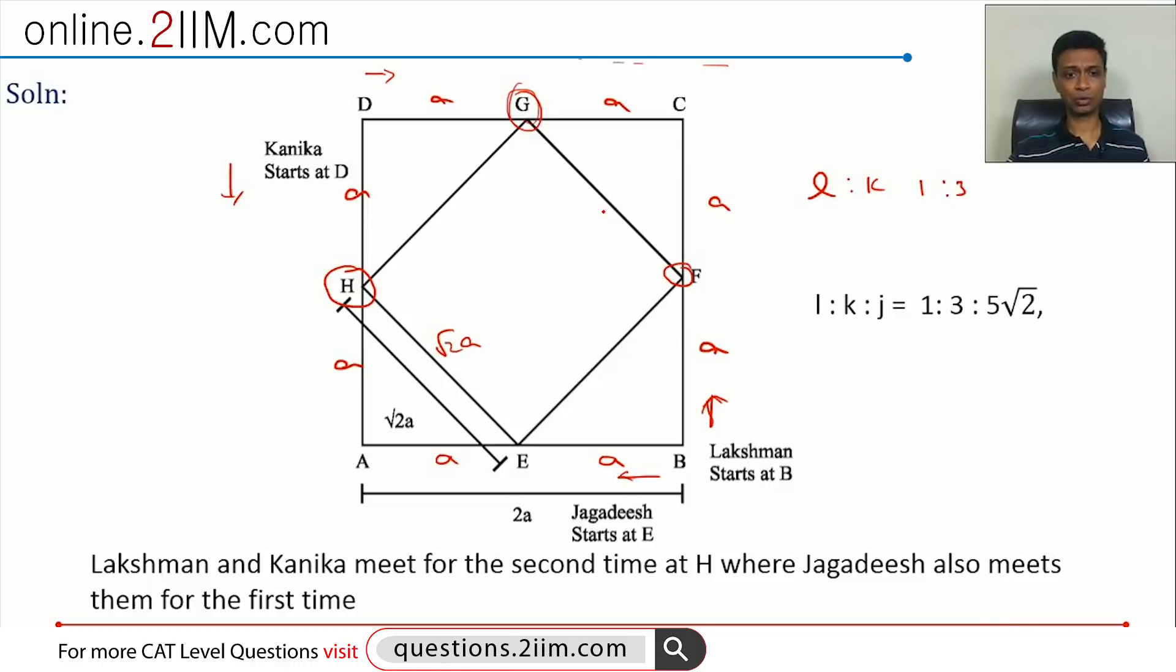Our question says they meet for the second time at H. So what this tells us is that Kanika should have been moving like this and Lakshman should have been moving like this. Let's verify that. If Kanika moves from D to B via DAB, she is moving in the anti-clockwise direction. That means for the first time they would meet where Kanika would travel 3A and Lakshman would travel just A.